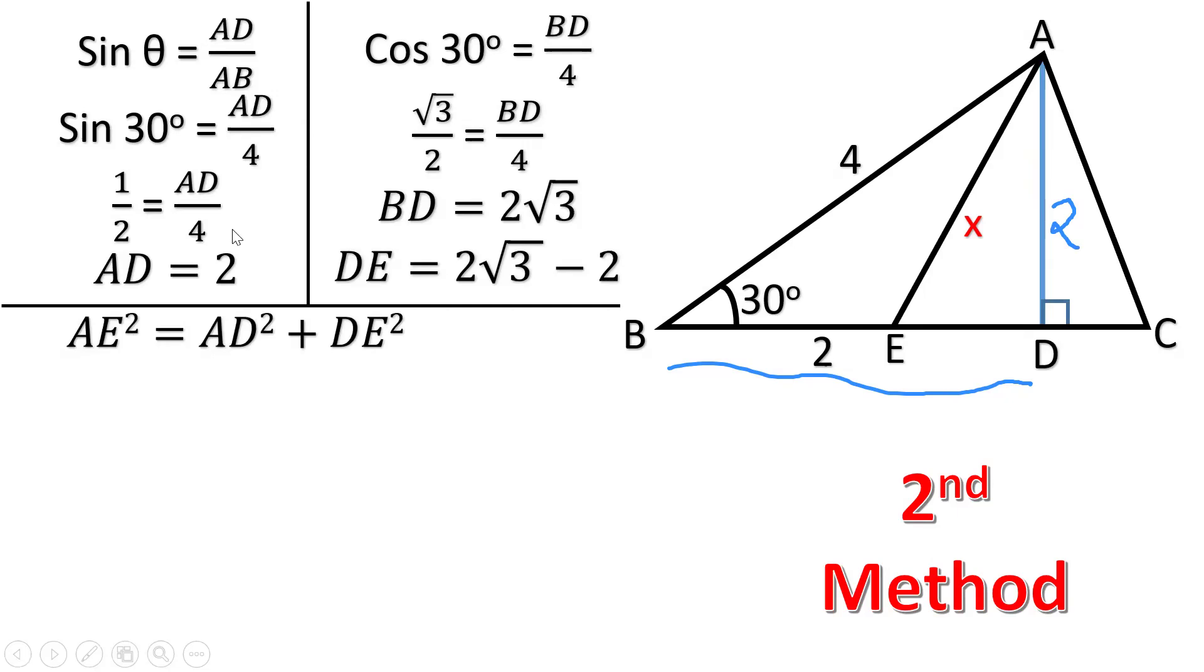So in triangle ADE, this triangle, AE square which is a right angle triangle, AE square is equal to AD square plus DE square.